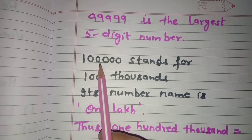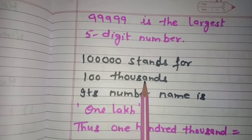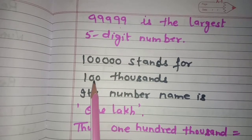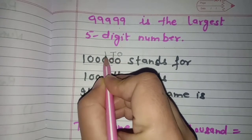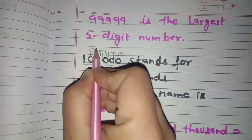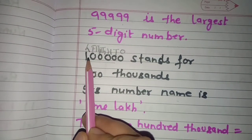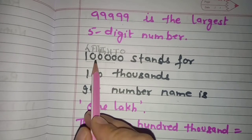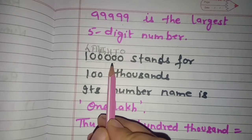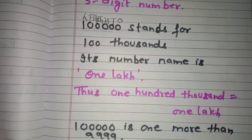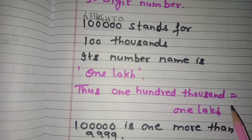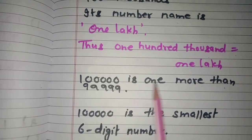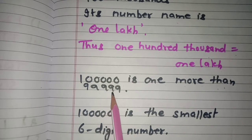One followed by five zeros — 1,00,000 — stands for one hundred thousand. How many thousands make one lakh? One hundred thousands. Its number name is one lakh. In the place value chart, the places are ones, tens, hundreds, thousands, ten thousands, and lakh. The digit 1 is under the lakhs place, so the number name is one lakh. One hundred thousand equals one lakh — both are the same.